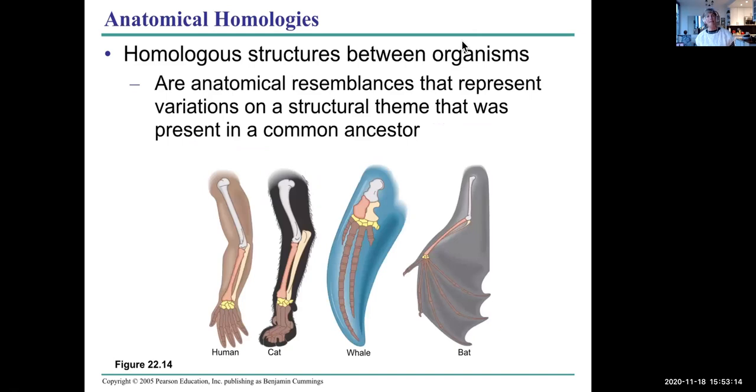So here's an example of homologous structures between organisms. They're anatomical resemblances. Here are four mammals. And we know that all mammals have a common ancestor. And the most basic feature of a common ancestor that all mammals have inherited are mammary glands and hair. So we know that whoever our ancestor was millions of years ago, it was an ancestor that had mammary glands and hair.